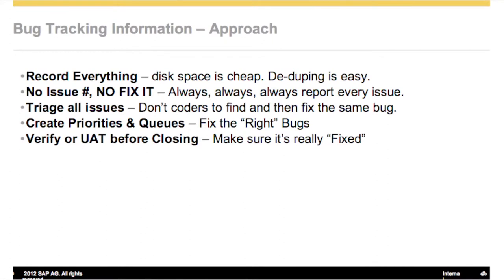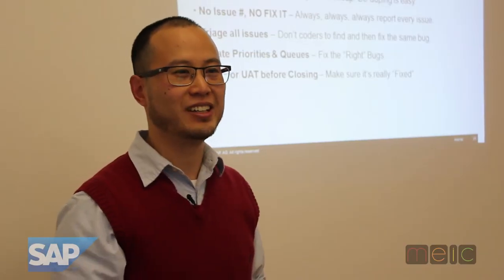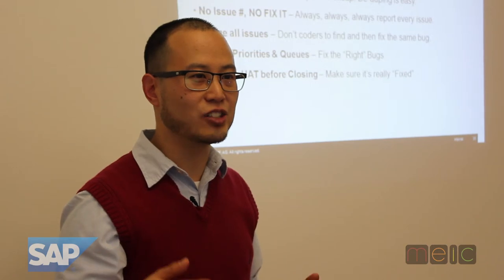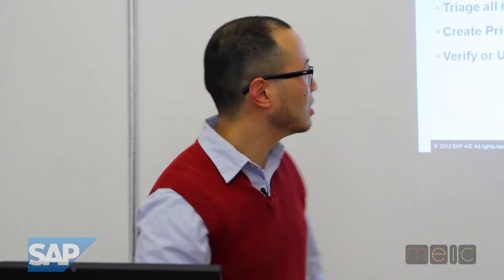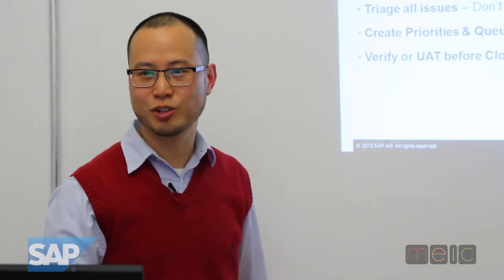No issue number, no fix. This is important. If they didn't put it in the bug tracking system, you cannot fix it — there's no tracking on it. It's like fixing something that doesn't exist, and it's going to cause more problems. If somebody says they're working on it, tell me the issue number. If they can't give you one, say you're not working on that. You have to push on this. With source control and tracking, I can go back and see what changes people made — sometimes changes aren't just fixes, they change the way the application works. We need a trail. No bug number, no fix.